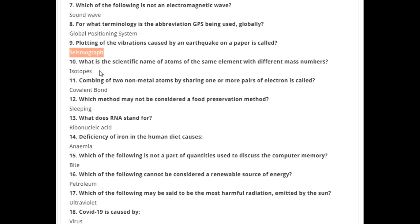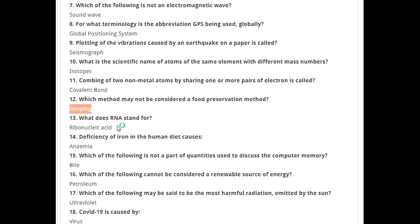Plotting of vibrations caused by an earthquake on paper is called seismograph. The scientific name for atoms of the same element with different mass numbers is isotopes. Combining of two non-metal atoms by sharing one or more pairs of electrons is called a covalent bond. Which method is not a food preservation method? Sleeping. What does RNA stand for? Ribonucleic acid.